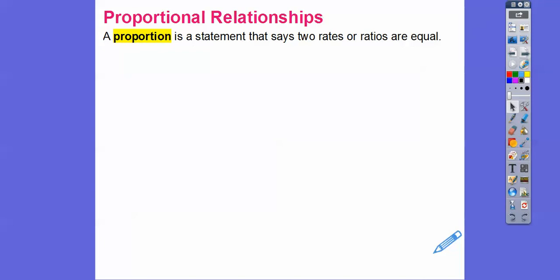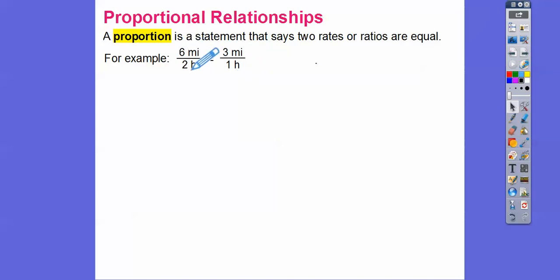A proportion is a statement that says two rates or two ratios are equal to each other — like two fractions being equal. For example, 6 over 2 equals 3 over 1. We put 3 over 1 because having 1 in the denominator makes it a unit rate: 6 miles for every 2 hours is the same as 3 miles for every 1 hour. These ratios are equal — that's called a proportion. Another example: 2 over 4 equals 1 over 2.